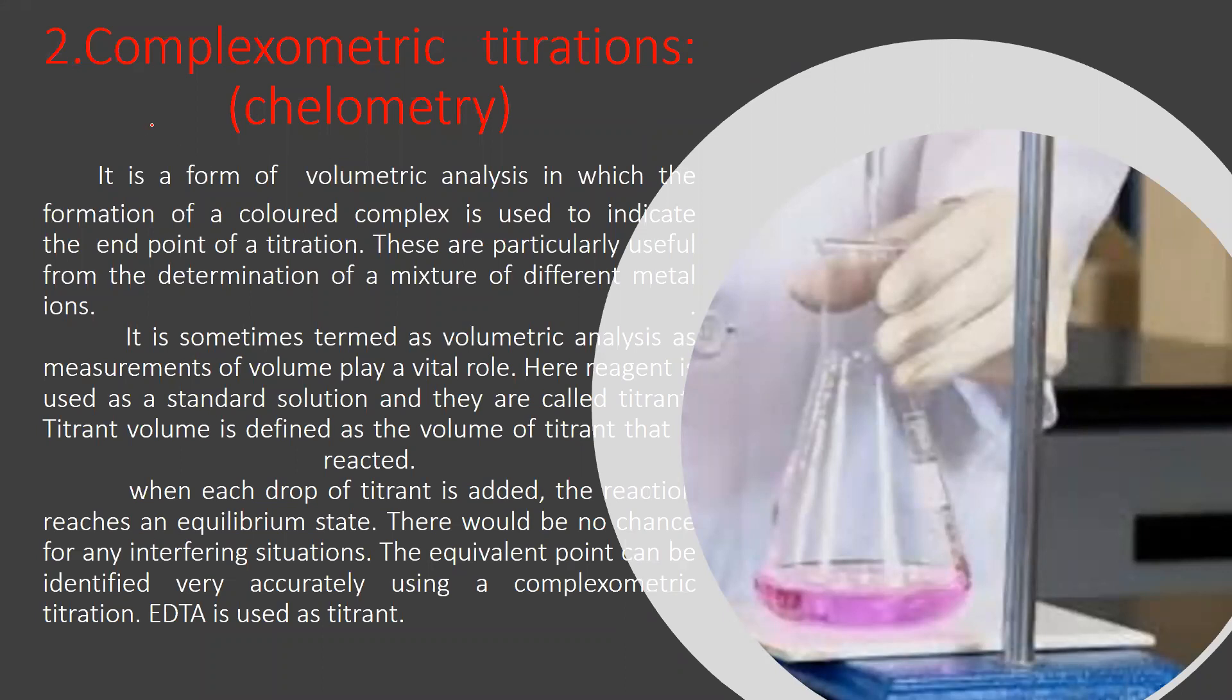These complexometric titrations are also known as chelometry. It is a form of volumetric analysis in which the formation of a colored complex is used to indicate the end point of a titration. These are particularly useful for the determination of a mixture of different metal ions. It is sometimes termed as volumetric analysis as measurement of volume plays a vital role.